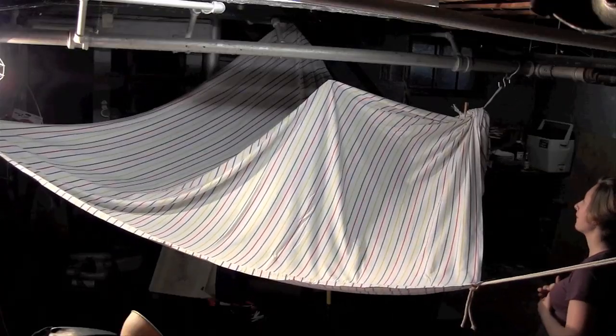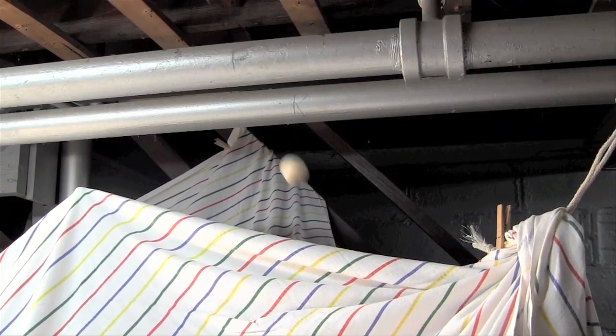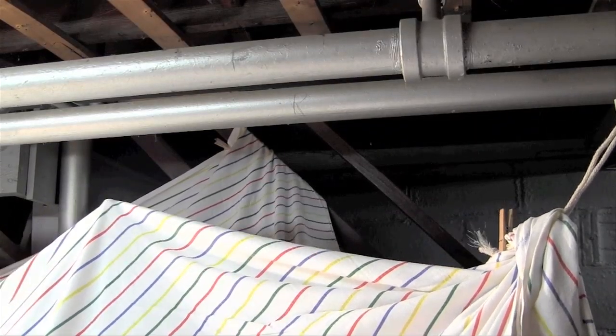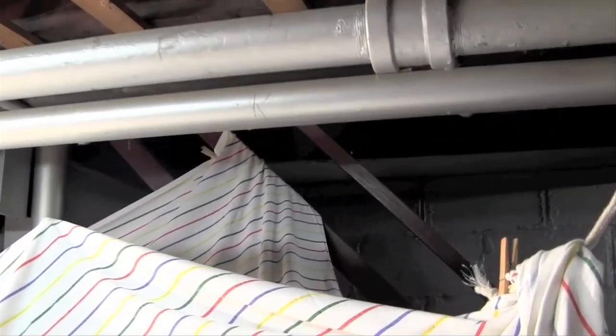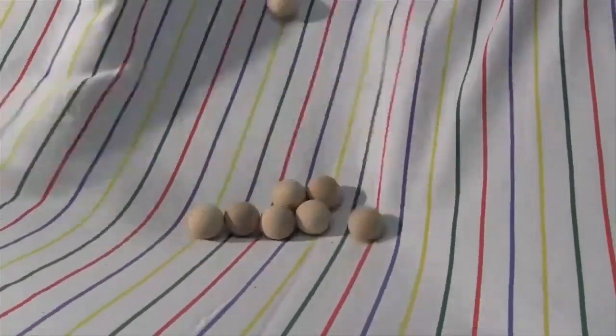It's the lowest valley, but it's not the only place the balls might settle. Some balls never make it to the lowest point. Instead, they settle in a different valley, in this corner. What's so special about these places? Each of these valleys is a stable equilibrium.